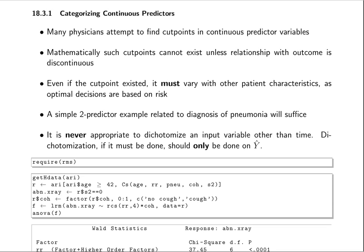that even if a cut point existed, it must, by necessity, vary with other patient characteristics, and that is because optimum decisions are based on risk.